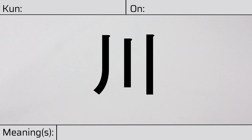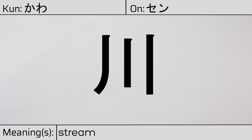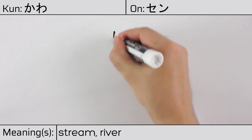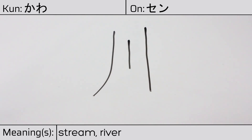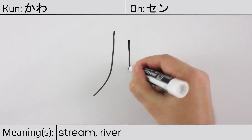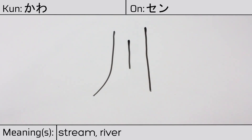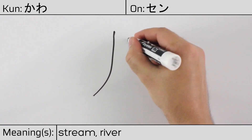Welcome to this lesson on Japanese kanji. Today, we'll be discussing this character. This kanji has a kunyomi or Japanese reading of kawa, and it has an onyomi or Chinese reading of sen. This character has the meanings stream or river. Here is the stroke order. This character has no radicals, but is a radical in many other composite characters.